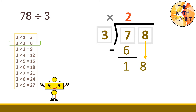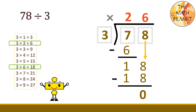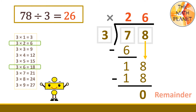Now, we have 18 divided by 3. We will use the sixth multiplication rule. 18 divided by 3 equals 6. We will write the 6 above the 8. Then, we will multiply: 6 times 3 equals 18. Finally, we subtract: 18 minus 18 equals 0. So, our remainder is 0 and the quotient is 26. So, 78 divided by 3 equals 26. And we are done solving this problem.